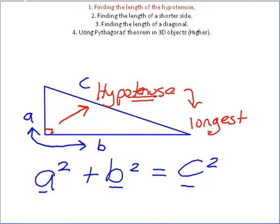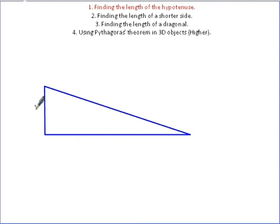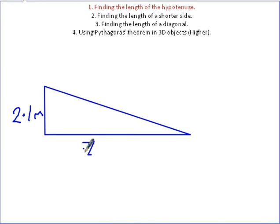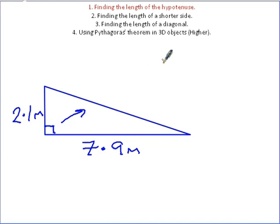Let's do a question. I don't already have any lengths on here because I want to show you that Pythagoras' Theorem will work with absolutely any values. So I'm going to use some decimal values to prove this. Let's say this one is 2.1 metres long and this length here is 7.9 metres long. I know the hypotenuse is going to be longer than 7.9 and 2.1. In the exam, it won't always tell you it's a Pythagoras question, but if you see a right-angle triangle and they're asking you to find the length of one of the sides, it's always going to be that.